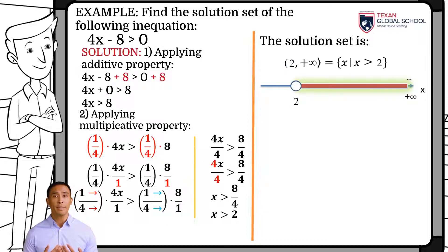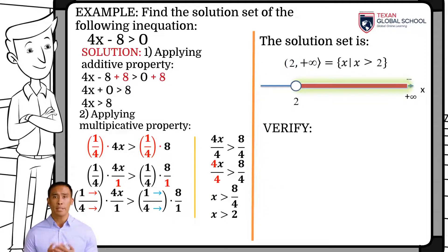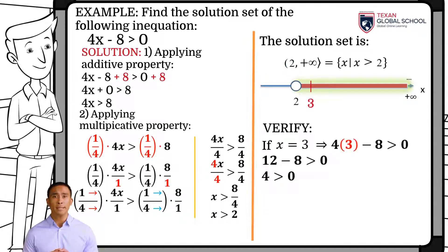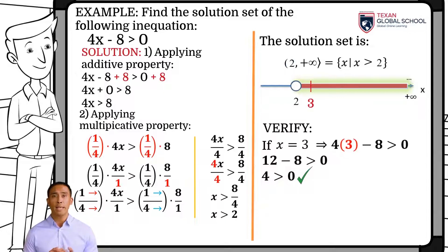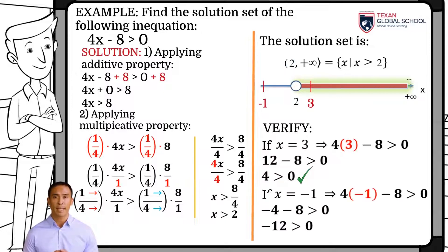To verify, we propose some value that belongs to the solution interval. For example, if x is equal to 3, by substituting in the original inequality and simplifying, results a true inequality, since 4 is greater than 0. However, if we propose a value outside the interval, for example if x is equal to negative 1, the inequality is false, since negative 12 is not greater than 0.